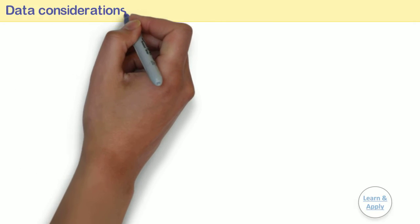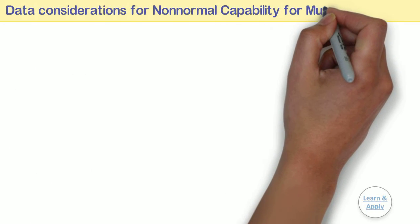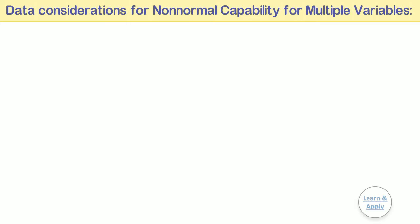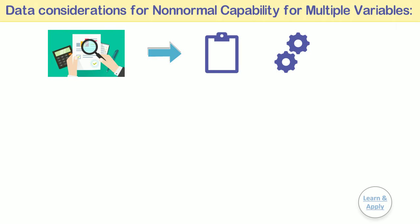Data considerations for non-normal capability analysis for multiple variables. To ensure that your results are valid, consider the following guidelines when you collect the data, perform the analysis, and interpret your results. These considerations are the same as non-normal capability analysis for single variable, but it's better to see all of them again.